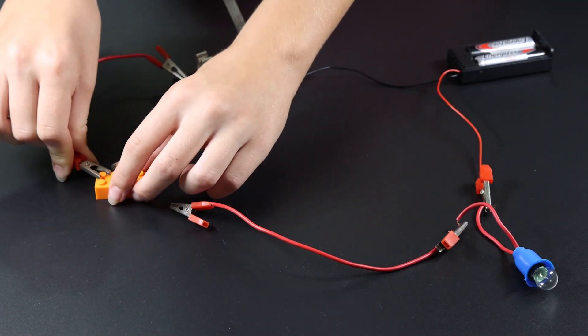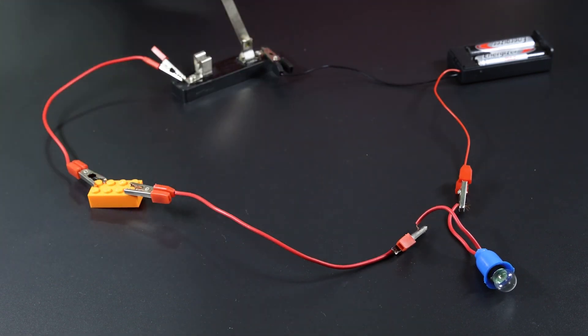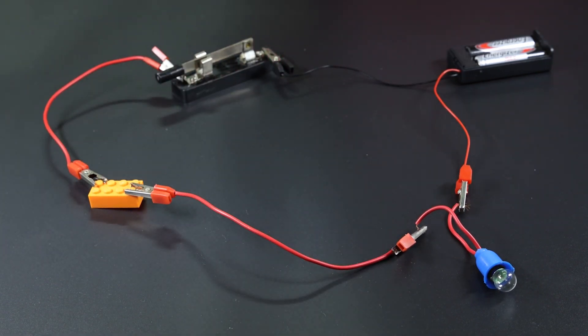Connect a plastic block and close the switch. And the bulb does not light up. The plastic block is an electrical insulator.